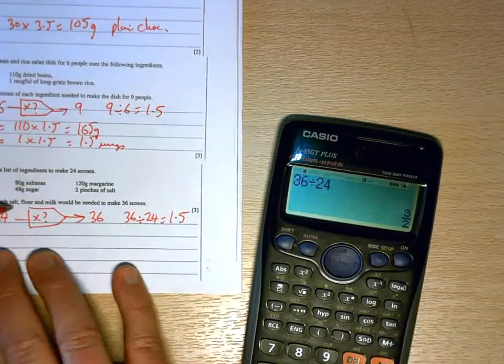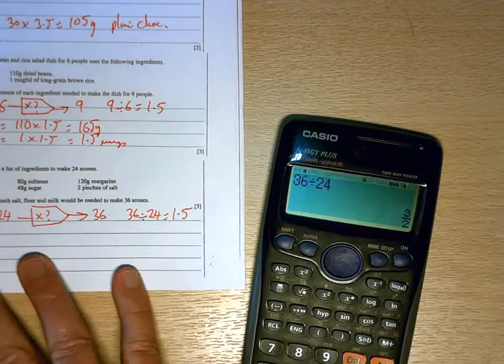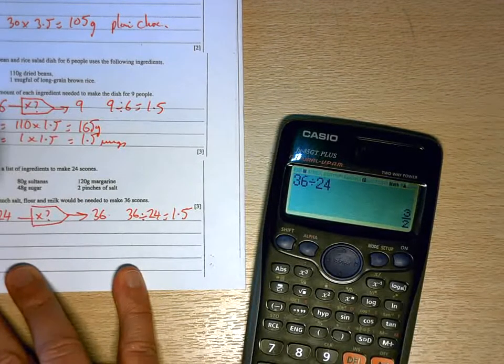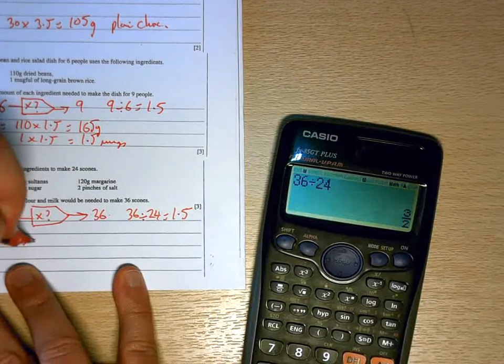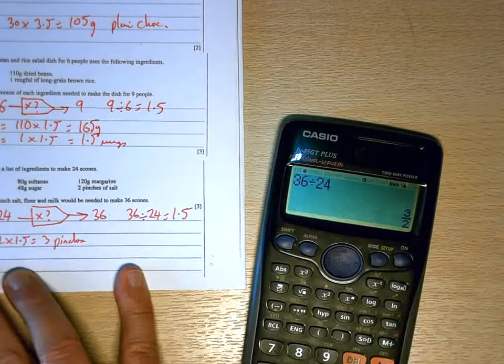So salt, flour and milk. Salt will be 2 pinches. So that goes to 3 pinches.